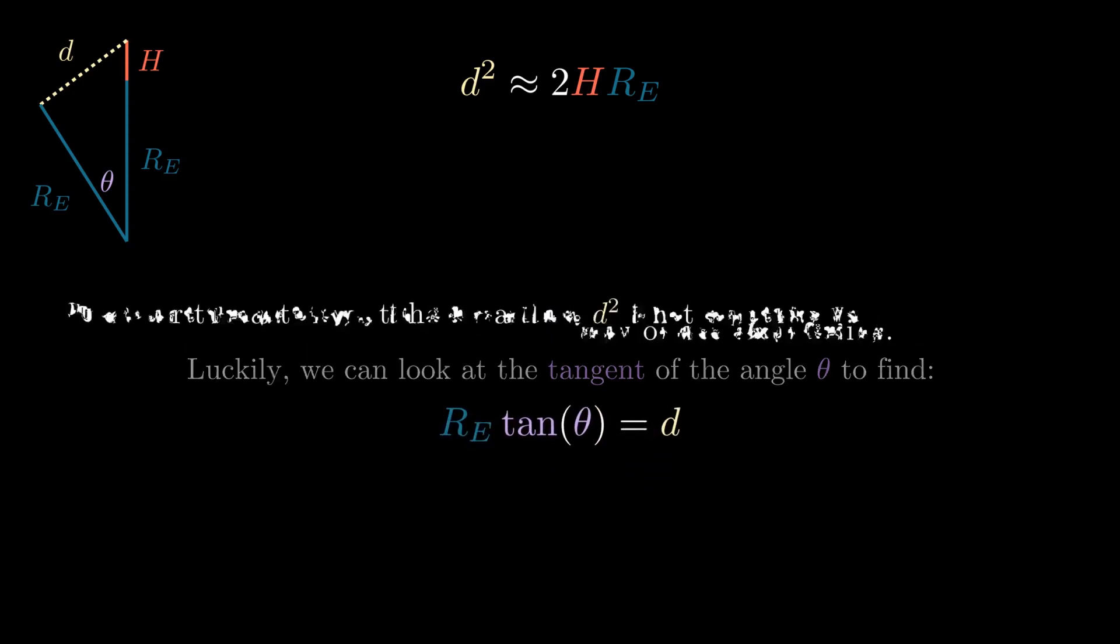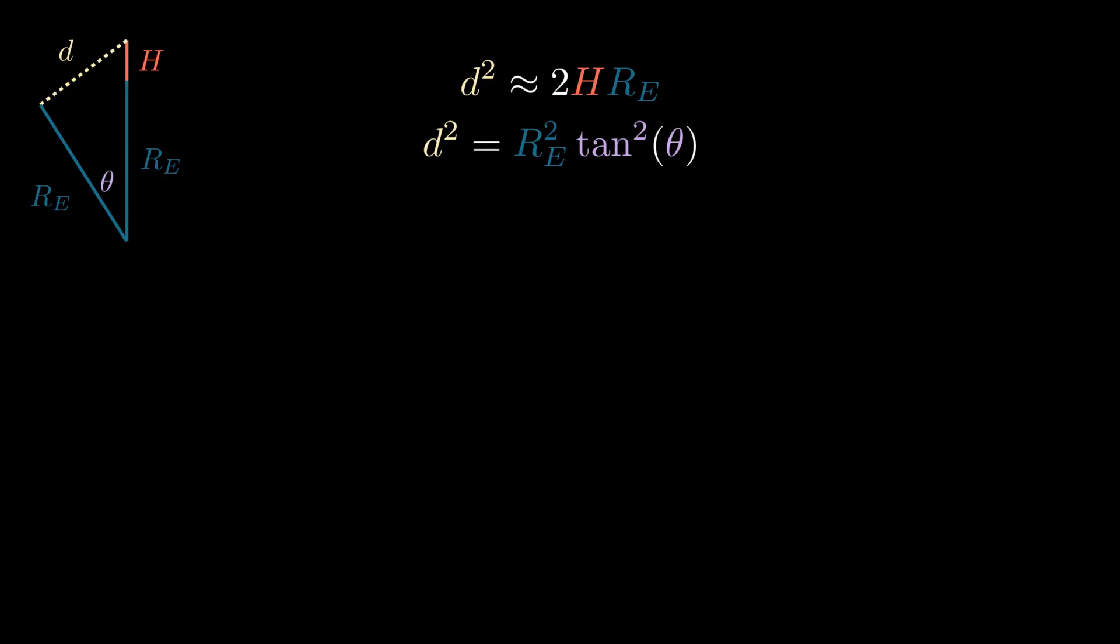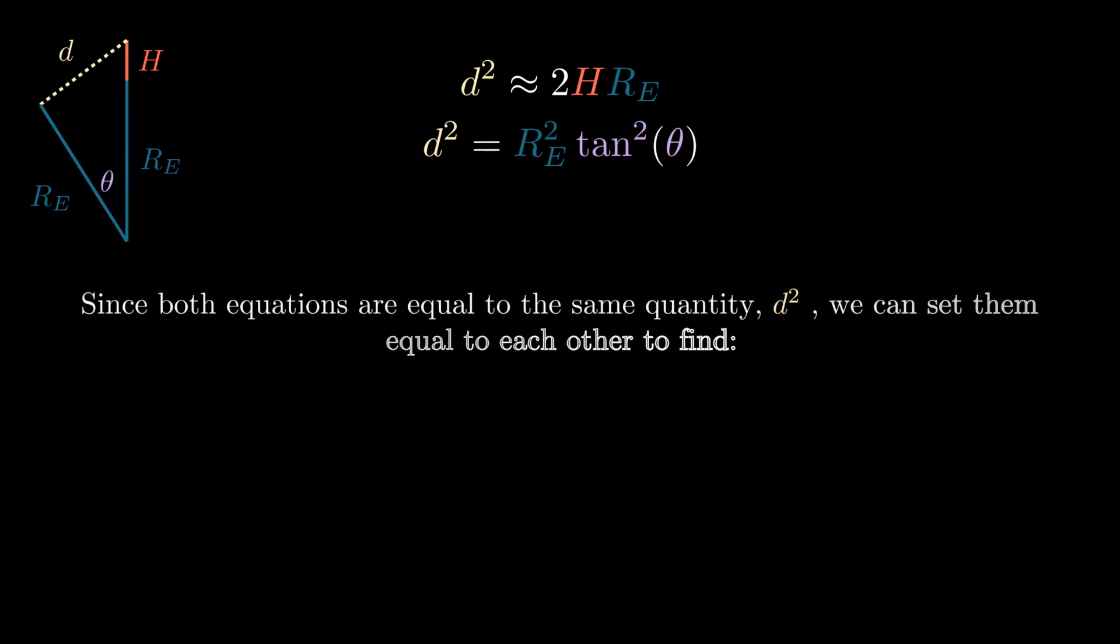Multiplying RE to both sides, we isolate d in this equation. Our first equation has a d squared, so we can square this equation so that it has the same term. Now we have two equations that are equal to the same quantity, d squared. We can set them equal to each other.